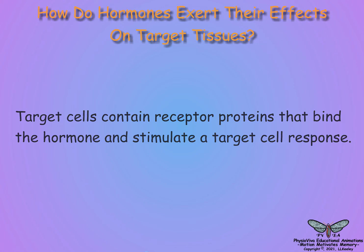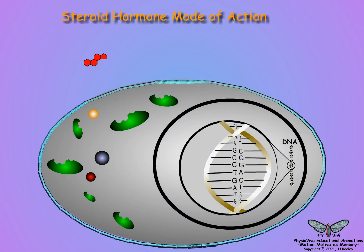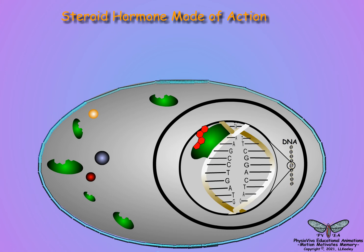Oil-soluble hormones, such as steroid hormones, dissolve in the lipids that comprise cell membranes and enter into target cells where they bind with receptor proteins in the cytoplasm and nucleus. The receptor proteins carry the hormones into the nucleus where they interact with genes to activate gene expression.